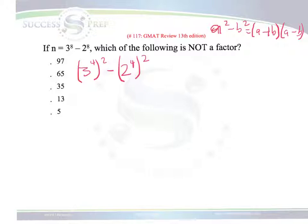What that allows us to do is to recognize the difference of two squares and break that up some more into 3 to the 4 plus 2 to the 4 and 3 to the 4 minus 2 to the 4.